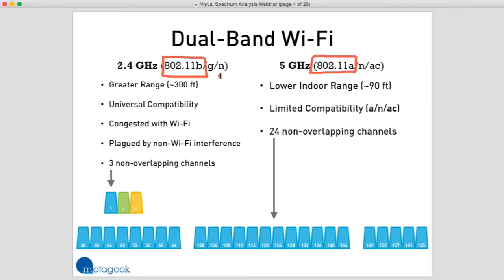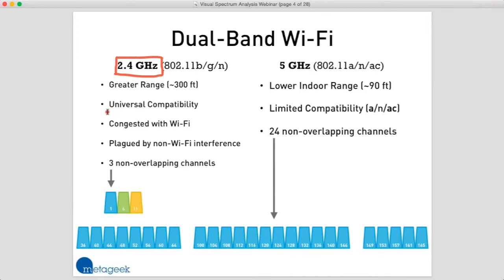We are still feeling the results of those events back in 1999 even today. If you go out and buy a wireless device today, it is going to support 2.4 gigahertz automatically out of the box. 2.4 gigahertz is universally compatible, whereas the 5 gigahertz band sees limited compatibility — we don't have nearly as many devices that work in the 5 gigahertz band.